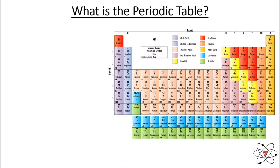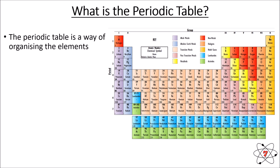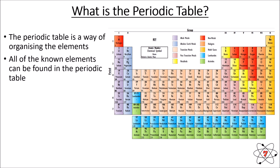So what is the periodic table? Very basically, it's just a way of organizing all of the elements. All of the known elements are found within the periodic table, and that includes all 92 naturally occurring elements as well as any artificial elements that have been made by people.